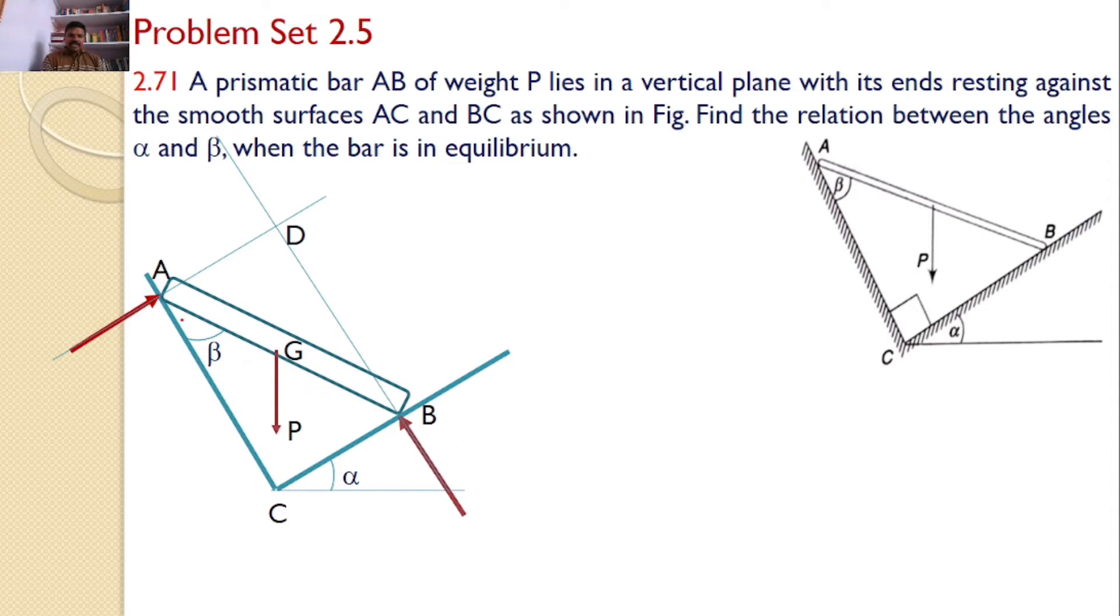Now you can see that ACBD is a rectangle because this line is parallel to this, this line is parallel to this, and this line is parallel to this. Hence ACBD, you can say it is a rectangle.